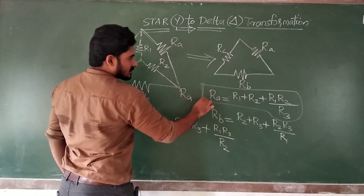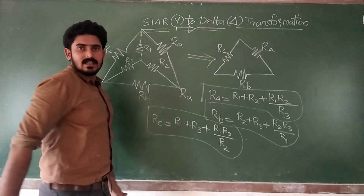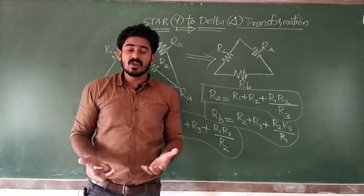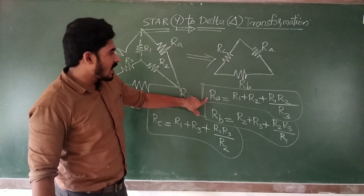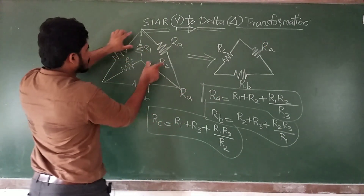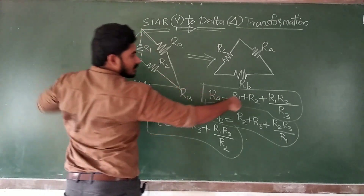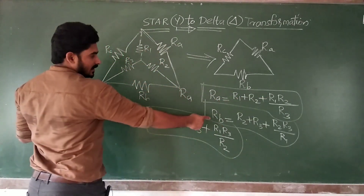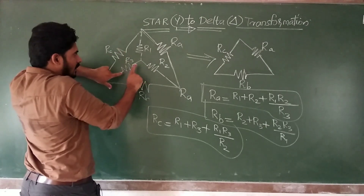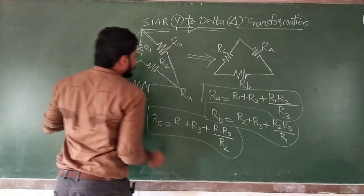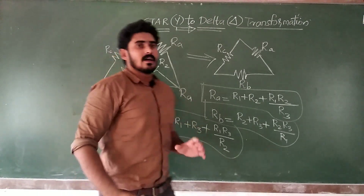Now we have the three resistor values for the delta connection. To summarize: for Ra, take R1 and R2, add them, plus multiply them, and divide by R3. For Rb, take R2 and R3, add them, plus multiply them — R2 into R3 — divided by the third resistor R1. Similarly for Rc — that's the same pattern.